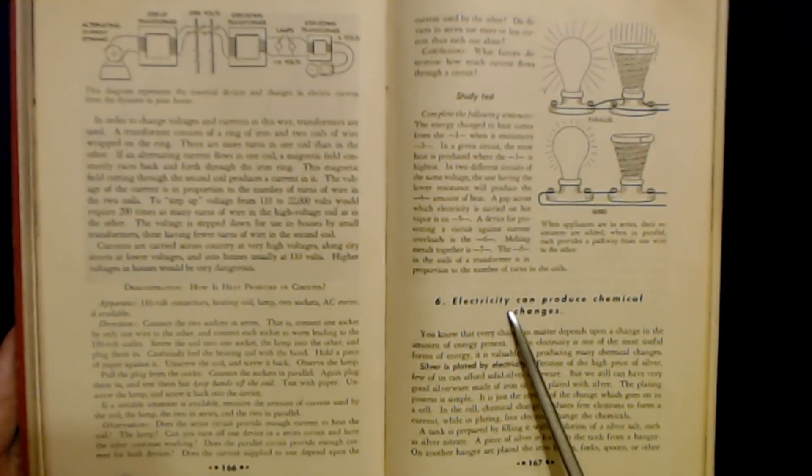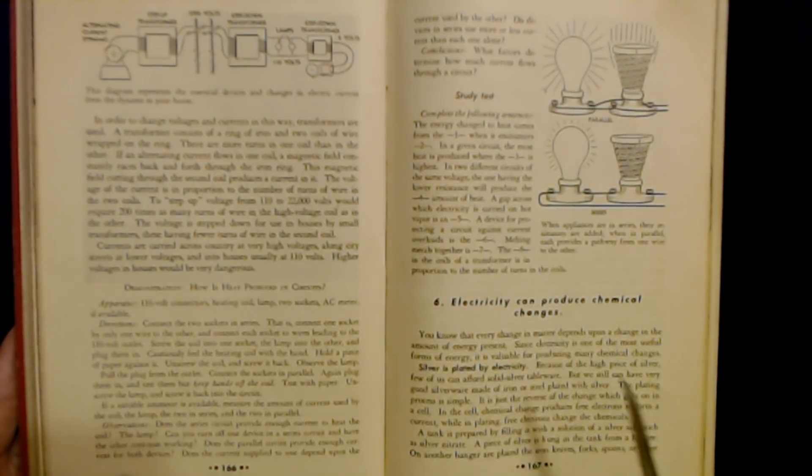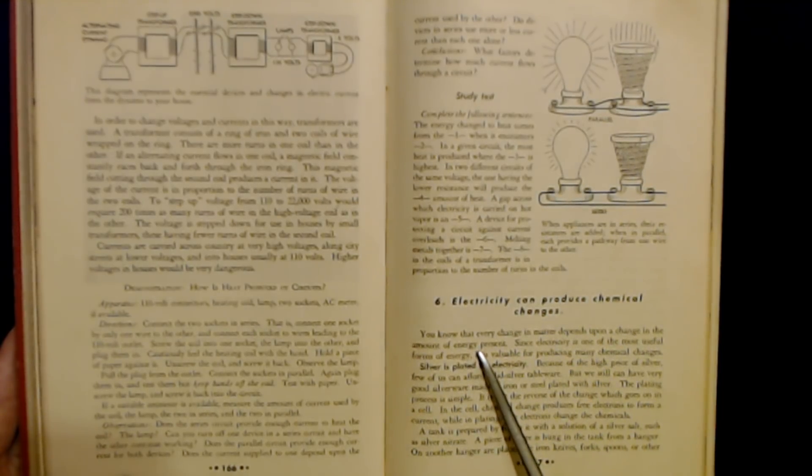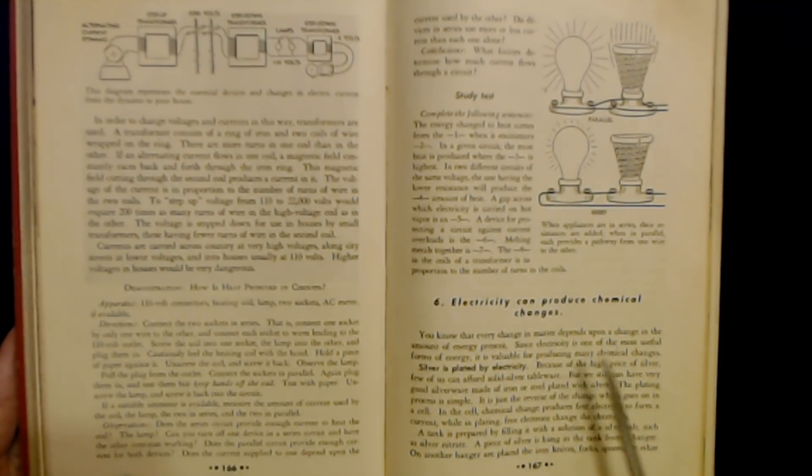Number six: Electricity can produce chemical changes. You know that every change in matter depends upon a change in the amount of energy present. Since electricity is one of the most useful forms of energy, it is valuable for producing many chemical changes.